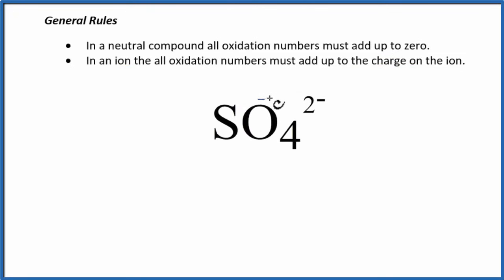We know oxygen has a minus 2 oxidation number, so we say sulfur, that's x, plus minus 2 times 4, we have 4 oxygen atoms, equals the charge on the ion. So we solve for x, and we find that x equals plus 6, and that's the oxidation number on the sulfur in SO4 2-.